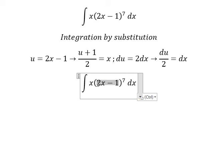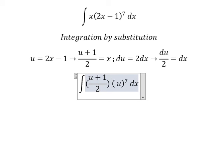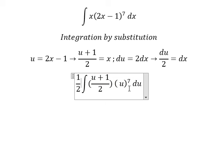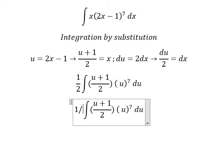So this one we change to u, x we change by this one, dx we change by du over number 2. So number 2 and number 2, we have one over 4.